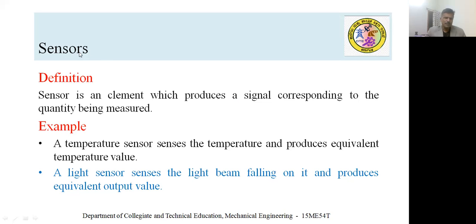Starting from the definition of a sensor: a sensor is an element which produces a signal corresponding to the quantity being measured. Different sensory devices sense an input value and give the output generally in the form of digital signals.